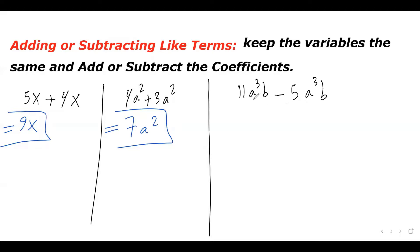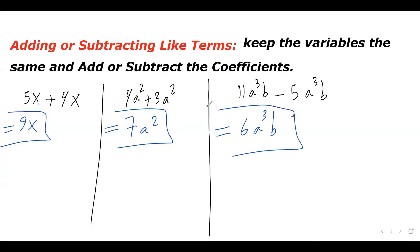How about 11a cubed b minus 5a cubed b? These two are like terms, so we're subtracting like terms. We keep the variable the same and subtract the coefficients: 11 minus 5 is 6, so the answer is 6a cubed b.